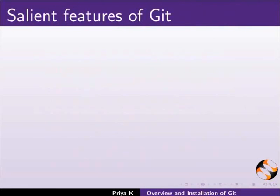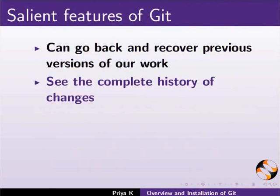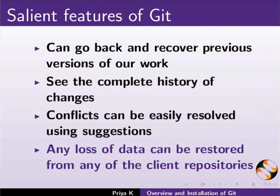The salient features of Git are as follows. We can go back and recover previous versions of our work. We can see the complete history of all the changes. Conflicts can be easily resolved using the suggestions given by Git. If there is loss of data, it can be restored from any of the client repositories.